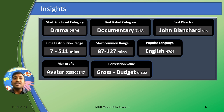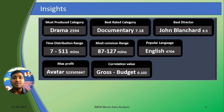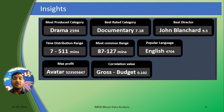But the best rated category is the documentary category, which recorded a 7.18 average rating. The best director is John Blanchard with a 9.5 rating. The time distribution range for all movies is from 7 minutes to 511 minutes, but the most common range is around 87 minutes to 127 minutes. The most popular language is English. Maximum profit is earned by the Avatar movie. The correlation value between gross and budget is 0.102.